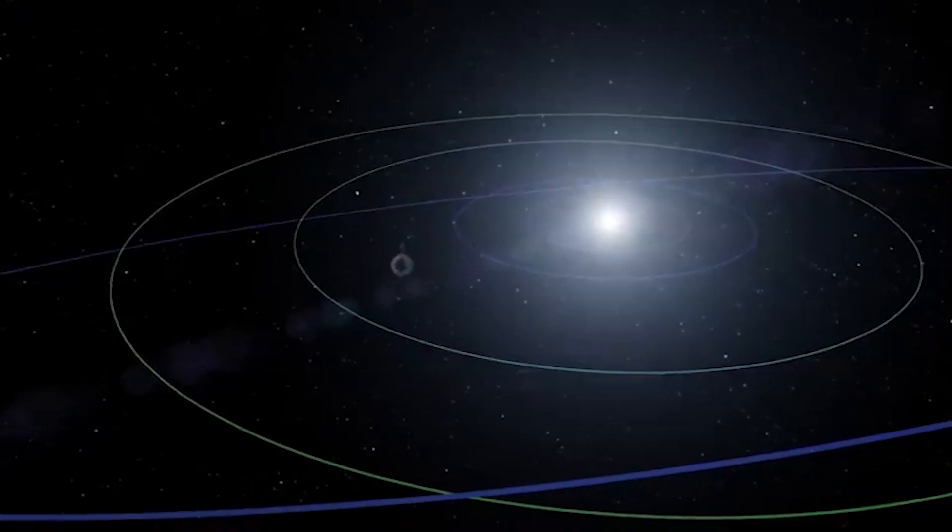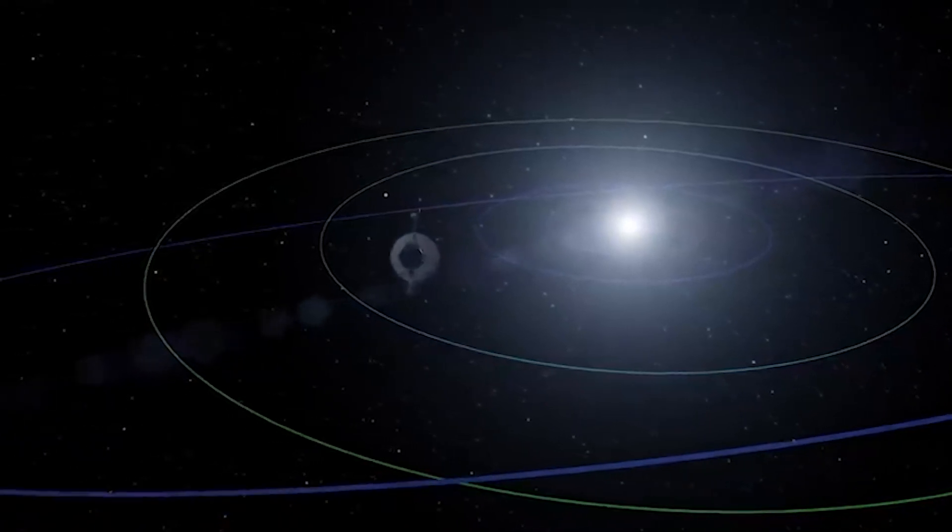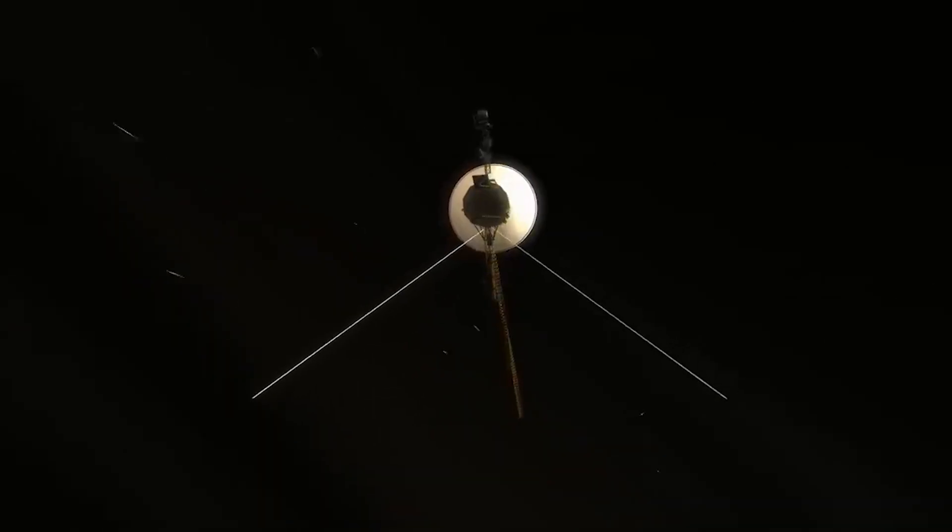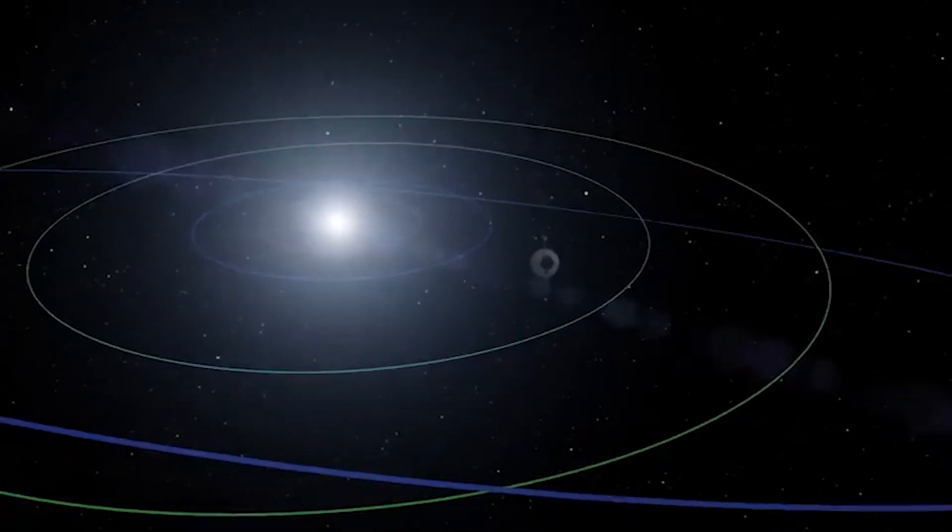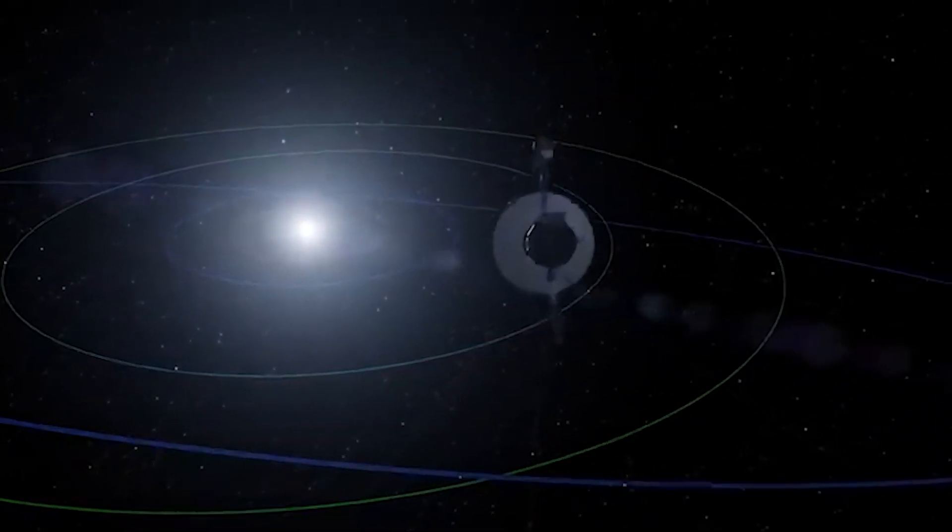NASA launched Voyager 1 on September 5, 1977 with the main objective of exploring the outer solar system. It carried on its journey into interstellar space after fulfilling its primary job in 1980. It is more than 22.5 billion kilometers away from Earth and is now moving at a speed of around 17 kilometers per second.